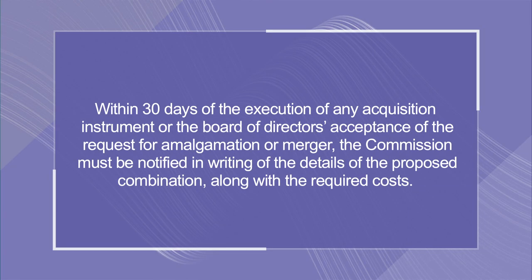Importantly, the provisions of the regulations for combinations are covered under Section 6 of the Act. It provides that within 30 days of the execution of any acquisition instrument or the board of directors' acceptance of the request for amalgamation or merger, the Competition Commission must be notified in writing of the details of the proposed combination along with the required costs. The time period prescribed for the combination to take effect is 210 days after giving of notice to the Competition Commission or the date on which the Commission has rendered any order with respect to that notice, whichever is earlier. This is all with regard to today's lecture on the Competition Act. In today's lecture, we tried to understand the various kinds of anti-competitive practices. Hope you enjoyed the lecture. Stay blessed.